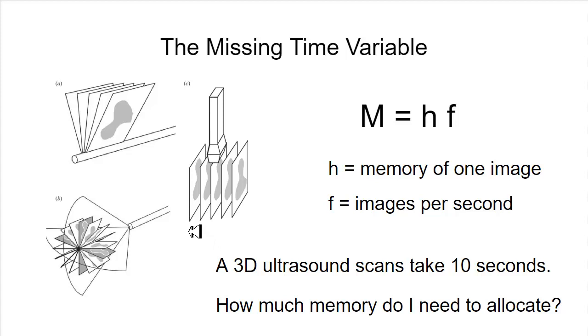In the system that I'm developing, the frames happen to be coming in at 30 frames per second. A 3D ultrasound scan takes 10 seconds. So if the 3D ultrasound scan takes 10 seconds and I am collecting 30 frames per second, how much memory do I need to allocate? That is the question. I needed to write the computer program to solve this problem.